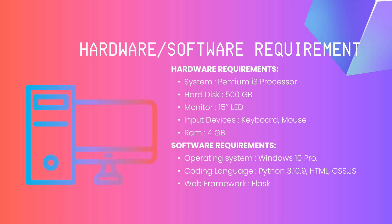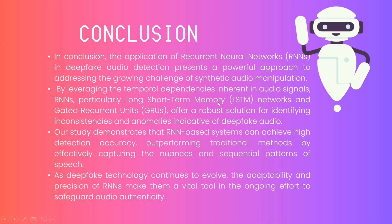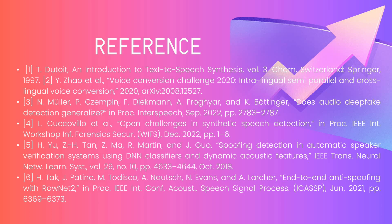To run this project, we need a minimum i3 processor and 4GB of RAM. This project is based on Python and the Flask framework. The overall advantage of RNN is it produces higher efficiency compared to the existing system and handles more frame rates. The proposed system will produce 98% accuracy overall. The conclusion is that using RNN with LSTM in deepfake audio classification produces higher accuracy, outperforming traditional CNN-based technologies. It can easily predict whether speech is AI-generated or original. References are also provided.